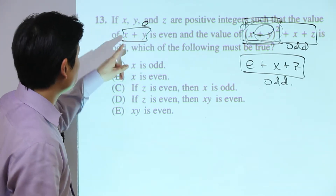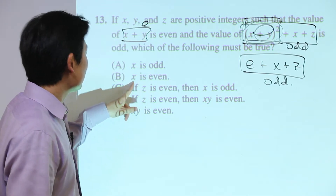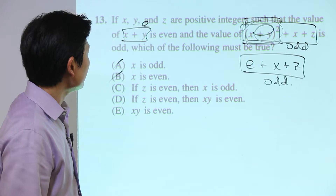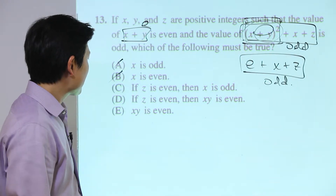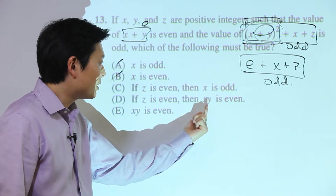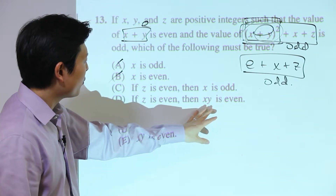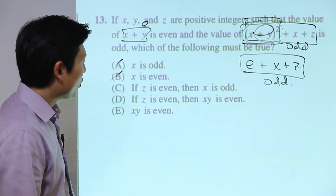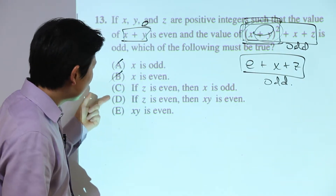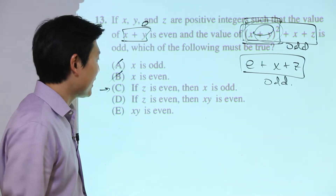Since we don't know anything about x individually, we can't say x must be odd or x must be even. Similarly, we don't know x and y individually, so we can't determine x times y. Those answer choices can be eliminated. Let's focus on answer choice C, which is actually the correct answer.